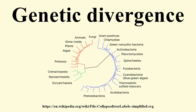Genetic divergence is the process in which two or more populations of an ancestral species accumulate independent genetic changes through time, often after the populations have become reproductively isolated for some period of time.